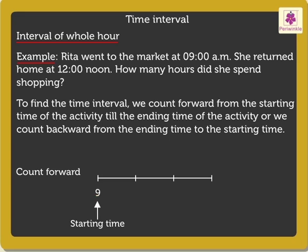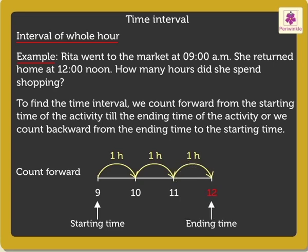On counting 1 hour from 9am, we reach 10am. Then from 10am to 11am is the next hour. And 1 hour from 11am is 12 noon, which is the ending time. So here we skip counted thrice at an interval of 1 hour and got the answer as 1 multiplied by 3, that is equal to 3 hours.